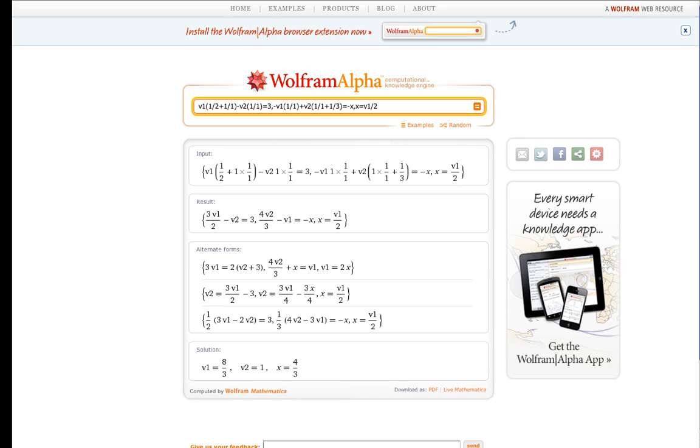So what this tells us then is that V1 is 8 thirds volts, V2 is 1 volt, and IX is 4 thirds amps.